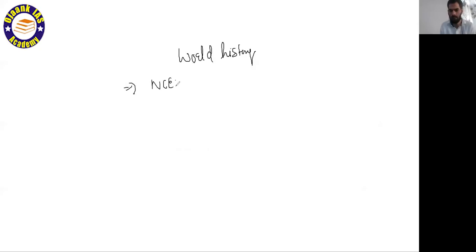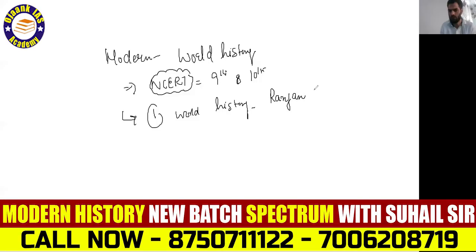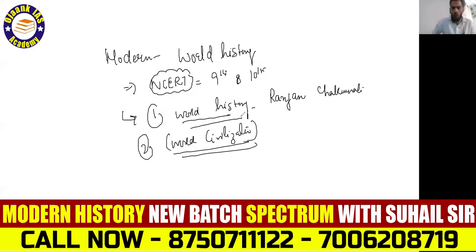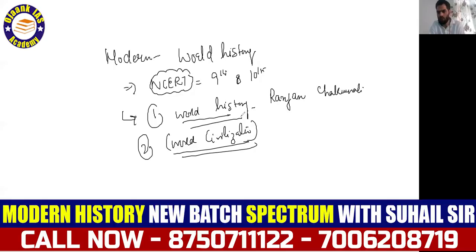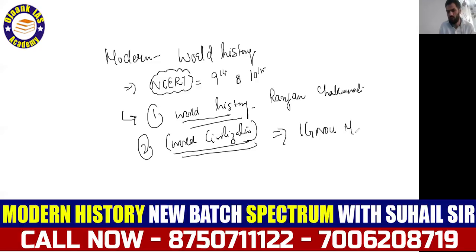For World History, remember the NCRT book — its name is 'Modern World History.' Also, the book 'World Civilization' by Chakravarti is very important. These two books — Modern World History and World Civilization — will be very important for your world history preparation. You can add some additional material along with previous year question papers.